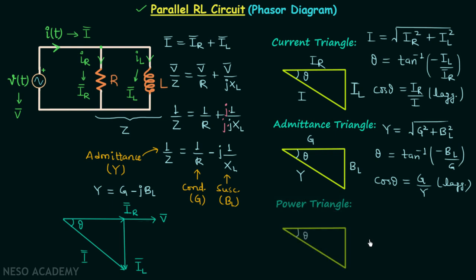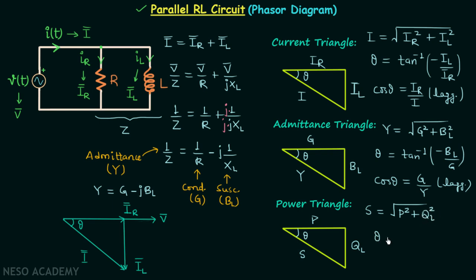Moving on to the power triangle: one side is the real power P, one side is the reactive power QL, and the hypotenuse is the apparent power S. Apparent power equals the square root of real power squared plus reactive power squared. The power factor angle theta equals tan inverse of negative QL divided by P, and the power factor cos theta equals real power divided by apparent power, and it will be lagging.